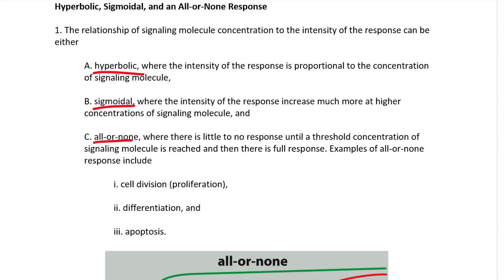Examples of all-or-none responses include cell division, differentiation, and apoptosis. With these three examples, you can't have half of cell division, or half differentiation, or half apoptosis. You either have no cell division, or you have the cell go through the cell cycle and complete the cell cycle and come out with two cells.